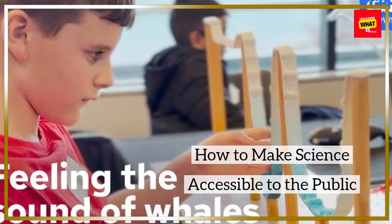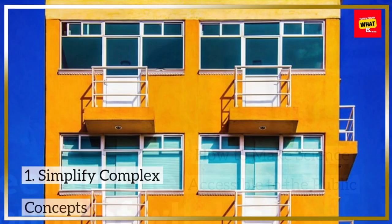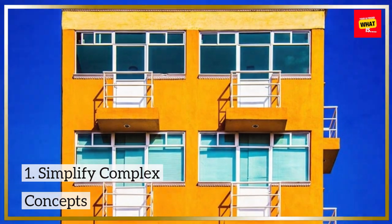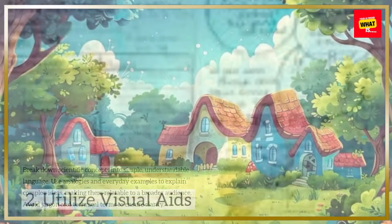How to Make Science Accessible to the Public. 1. Simplify Complex Concepts: Break down scientific concepts into simple, understandable language. Use analogies and everyday examples to explain complex ideas, making them relatable to a broader audience. Avoid jargon and technical terms to ensure clarity.